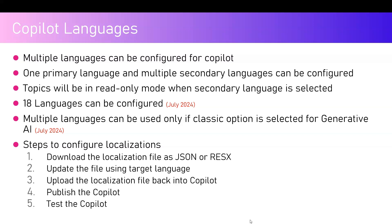Let's focus on the steps to configure localization. Say our primary language for the bot is English, and we want secondary languages Hindi and Spanish. To achieve this goal, first provision a bot using English language, then go to a specific topic and start adding localization files. The steps are: download the localization file as either JSON or RESX format, update the file using the target language, upload the localization file back into Copilot, publish the Copilot, and test it.